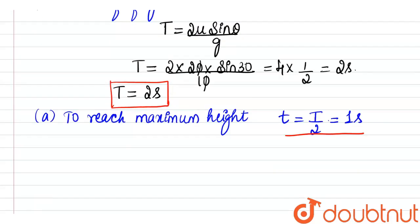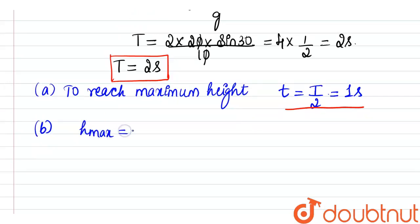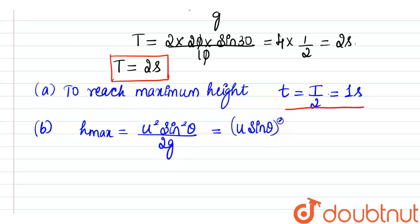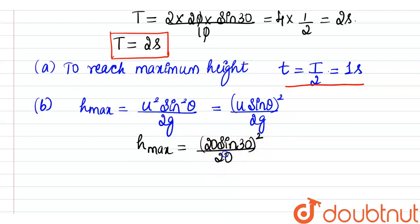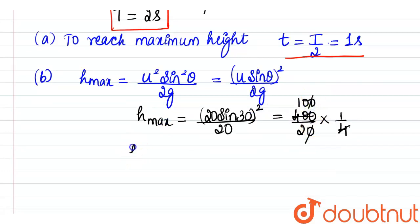Next, to find the maximum height reached under projectile motion, the formula is H_max = u² sin²θ / 2g, which can be written as (u sin θ)² / 2g. Substituting: H_max = (20 sin 30)² / (2 × 10) = (10)² / 20 = 100/20. Since sin 30 = 1/2, we get H_max = 5 meters. Therefore, the maximum height reached by the ball is 5 meters.